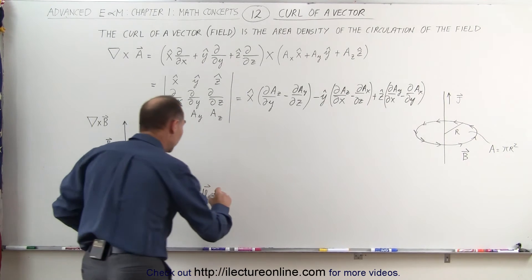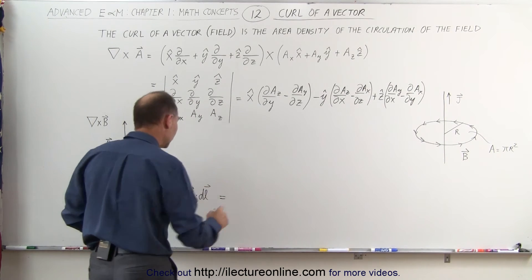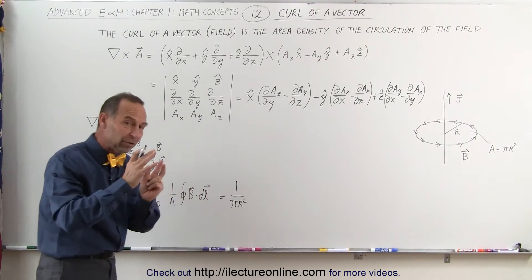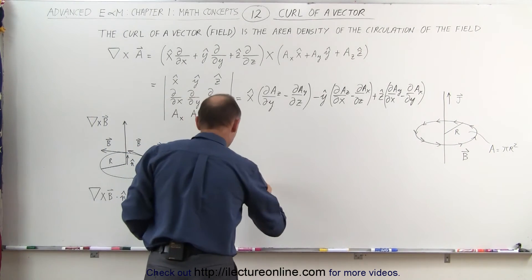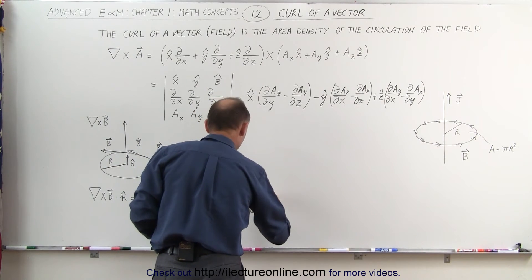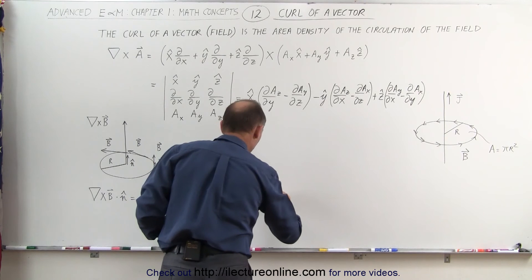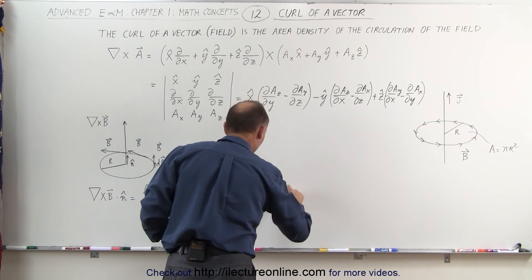And if we then go ahead and plug in the numbers, that would be 1 over pi R squared, as R gets to be smaller and smaller, times the strength of the magnetic field, B times the distance as we go all the way around, which is 2 pi times R.